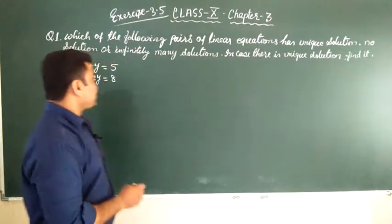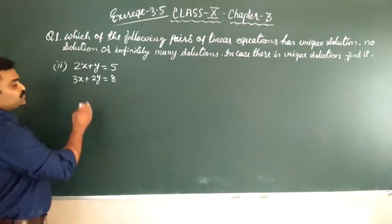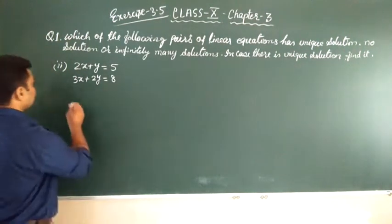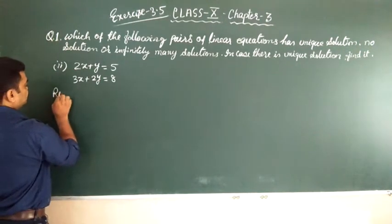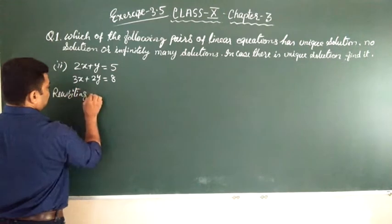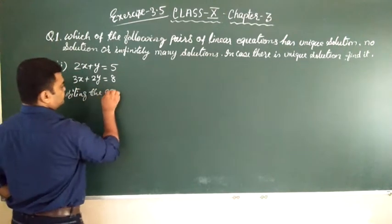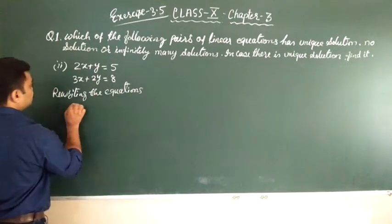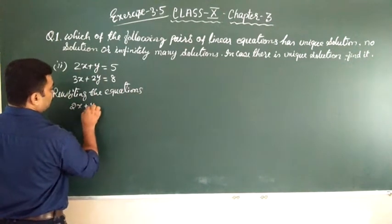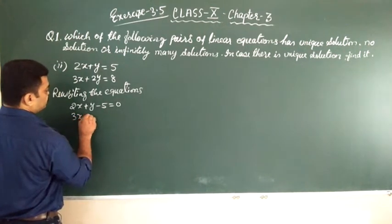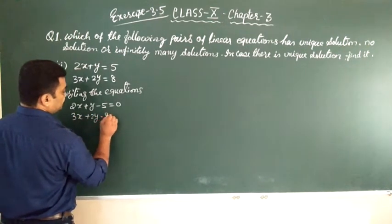First of all, we will write the equations in the general form. Rewriting the equations, that is 2x plus y minus 5 is equal to 0 and 3x plus 2y minus 8 is equal to 0.